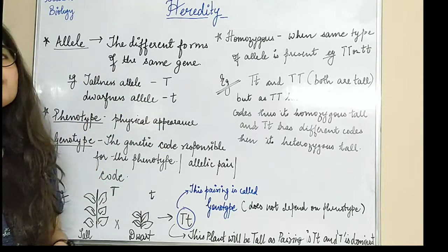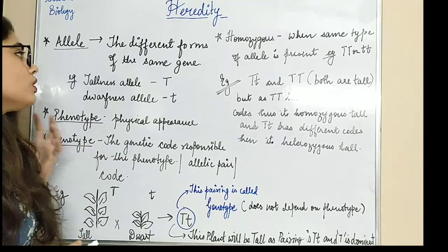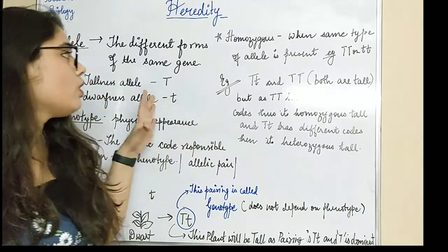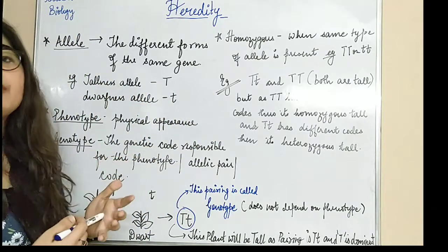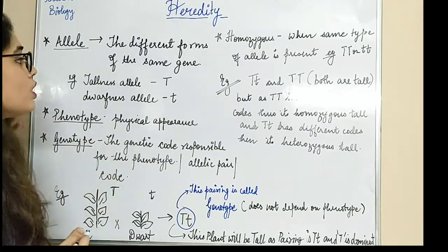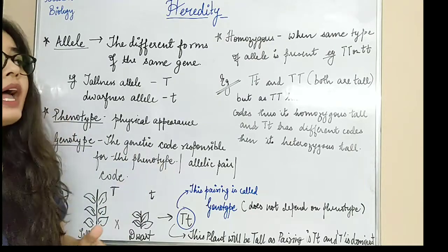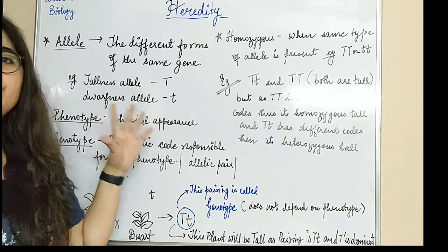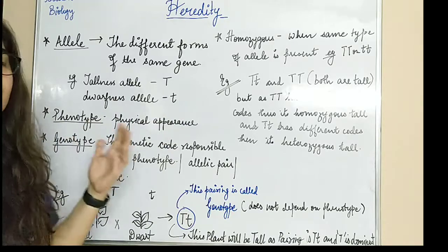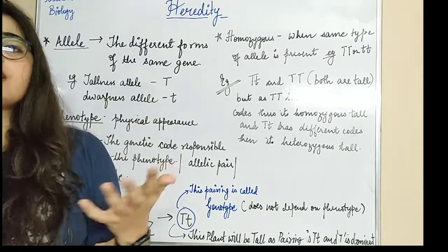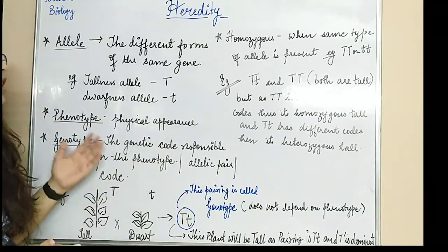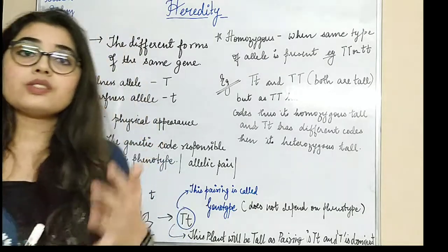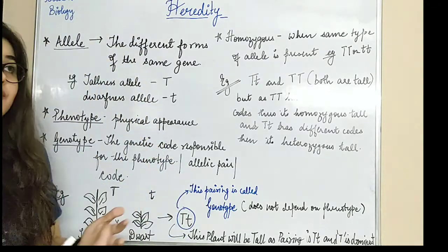In the previous video, we talked about all the ratios and how the process will take place — the different traits, the pea plant's seven characteristics, the contrasting characters. Then we saw who is dominant, who is recessive, what is dominant, what is recessive.